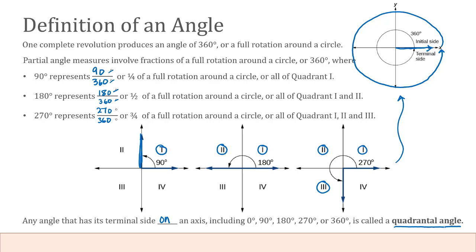In this case, for the 90, that was on the positive y-axis. For the 180, that was on the negative x-axis. For 270 degrees, that is on the negative y-axis. And of course, the 360 degrees we saw terminate on the positive x-axis. Those are all on axes. They're not terminating somewhere in the middle of a quadrant.